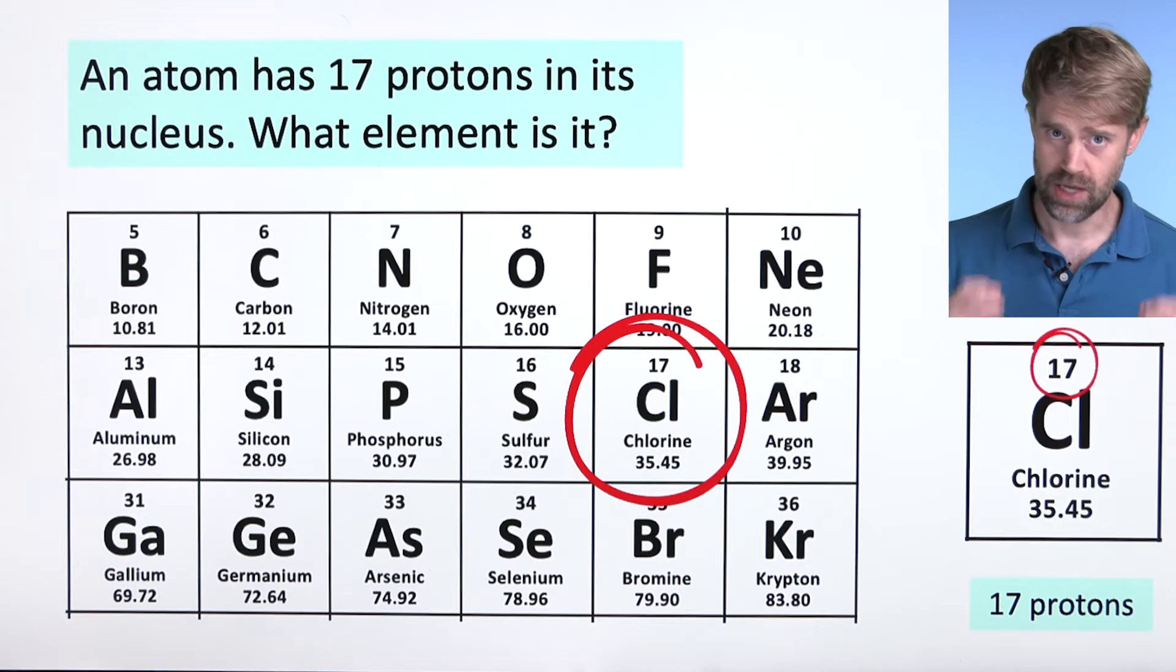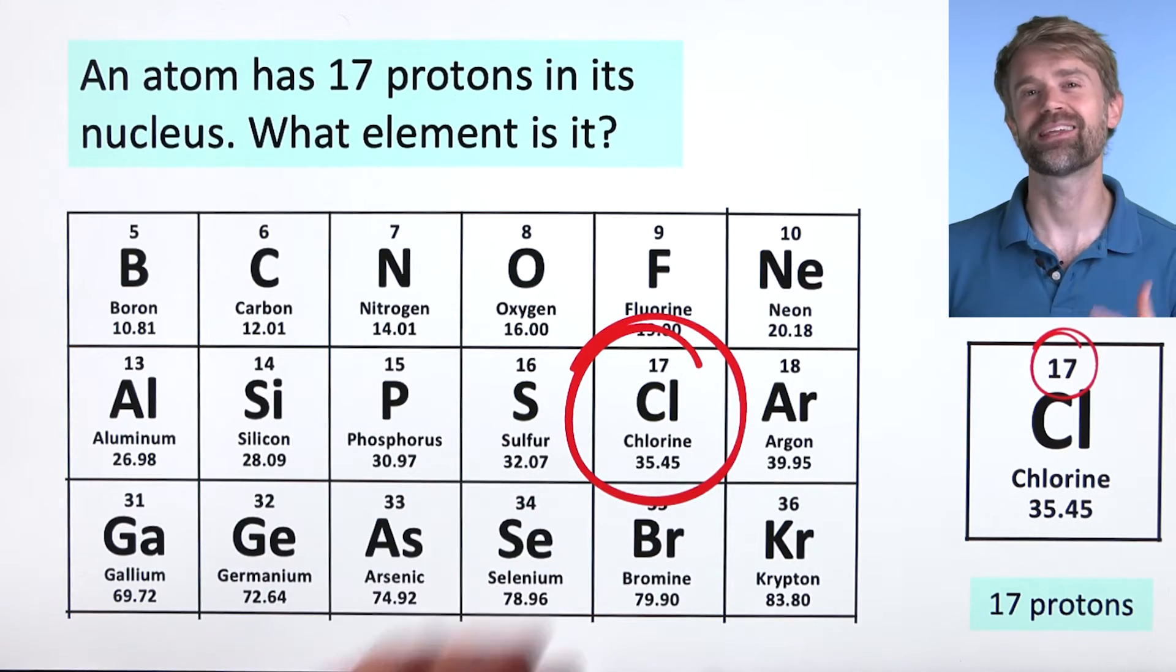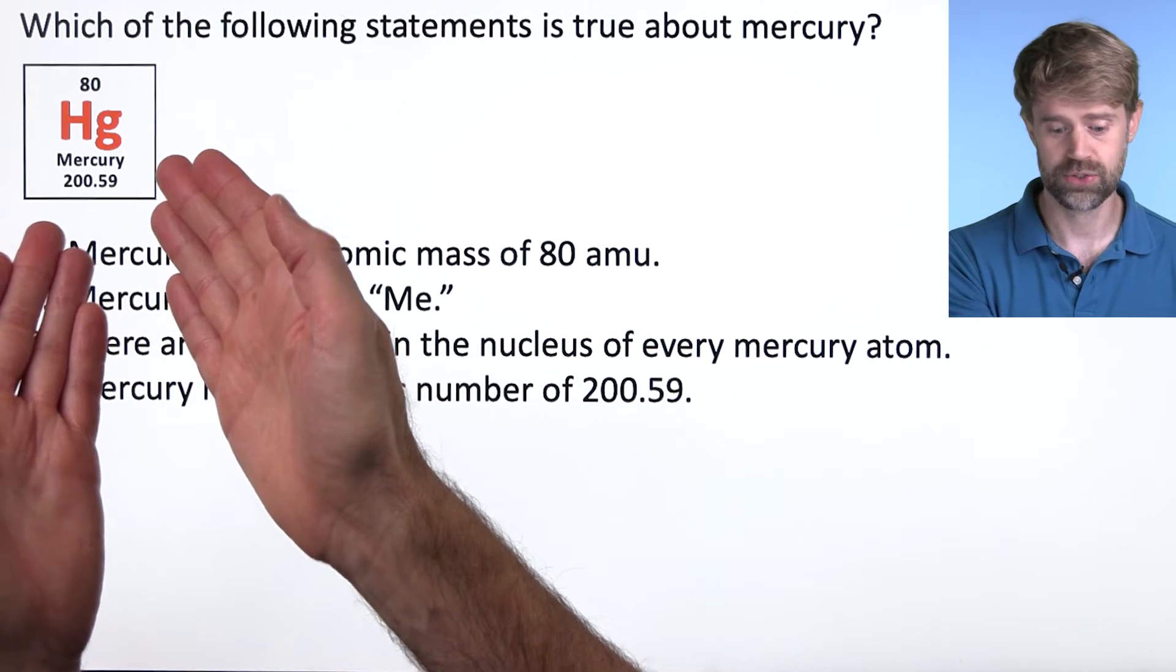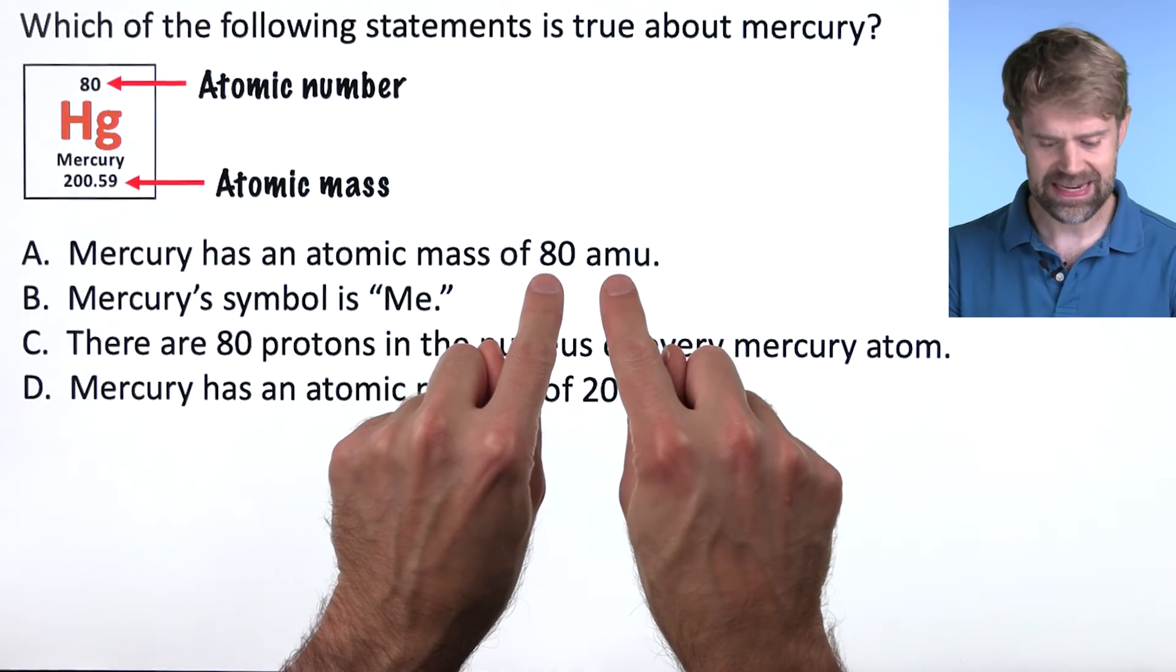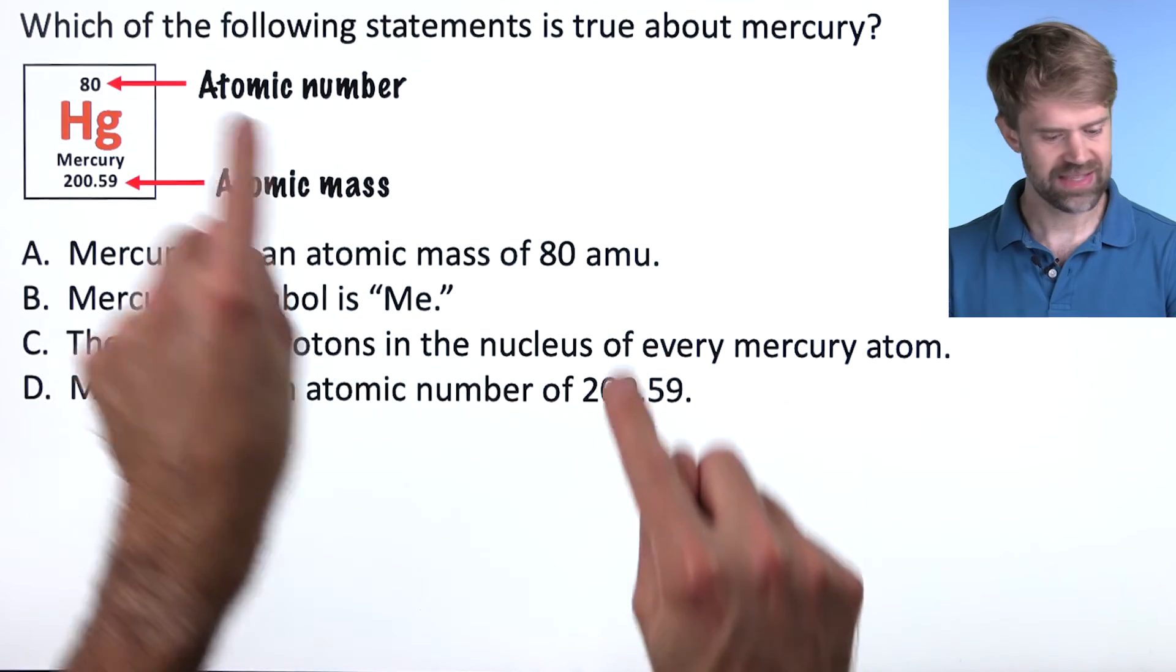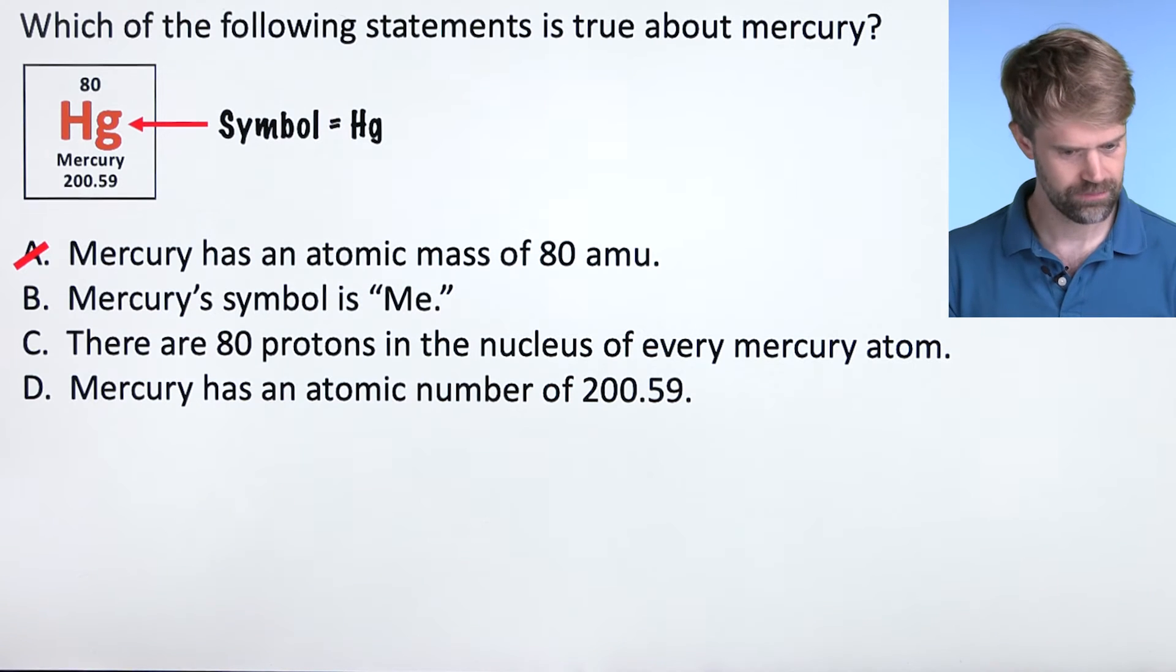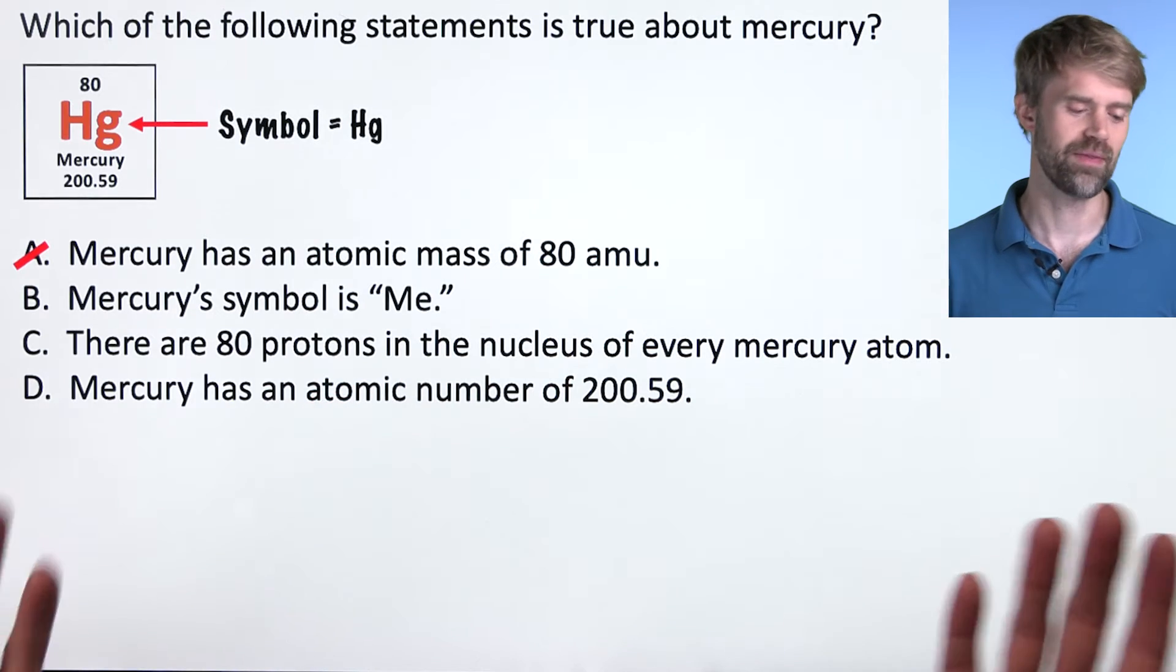Now let's look at some examples of how the TEAS is going to ask questions about protons and atomic number. As I always say, we like to mix things up a little bit and try to make things trickier than they need to be. Here we go. Which of the following statements is true about Mercury? And they give us the periodic table square. Let's look at the choices one by one. Choice A states that Mercury has an atomic mass of 80 AMU. 80 is up here, but that's the atomic number. It's not the atomic mass. So this is false. Cross it off. Choice B says that Mercury's symbol is ME. Well, come on. That's a really easy one. The symbol for Mercury is HG.